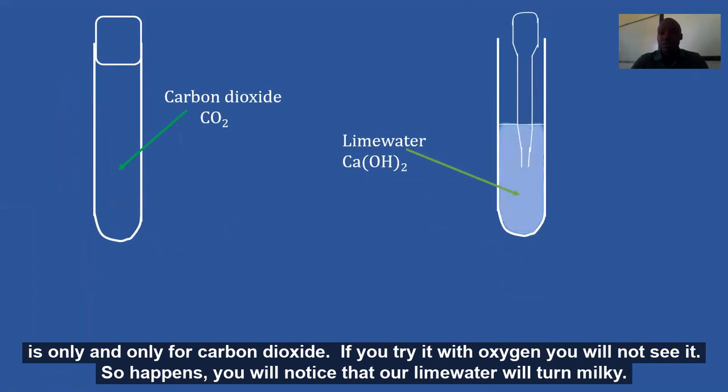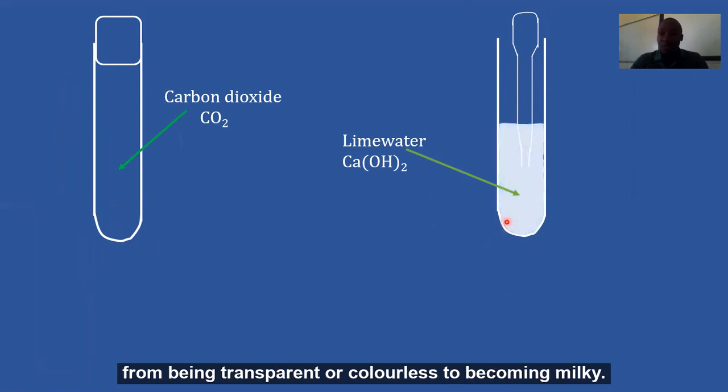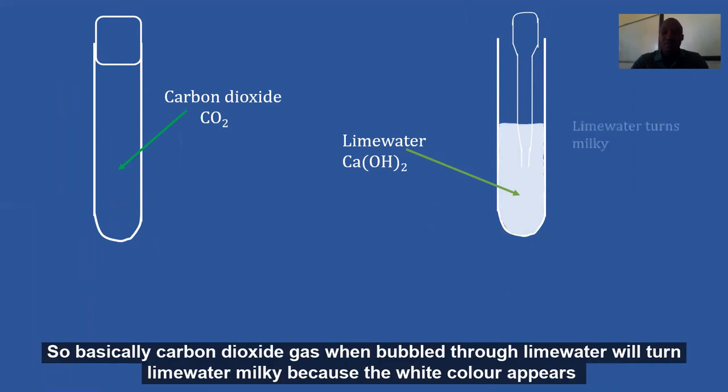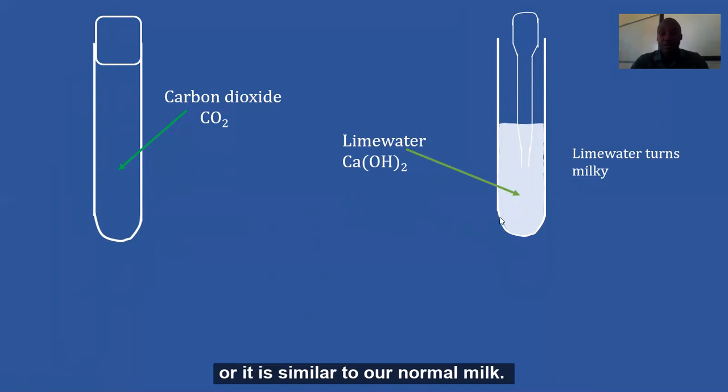So what happens? You'll notice that our lime water will turn milky from being transparent or colorless to becoming milky. So basically, carbon dioxide gas when bubbled through lime water will turn lime water milky because the white color appears, similar to our normal milk.